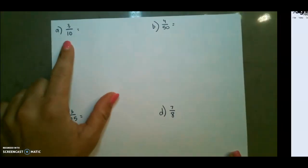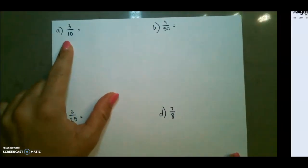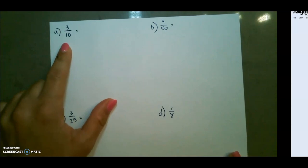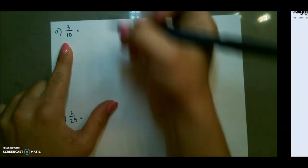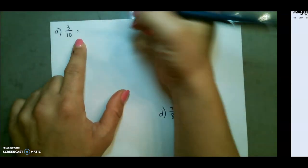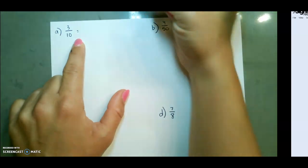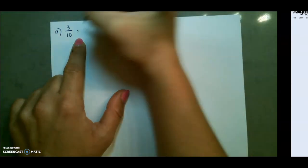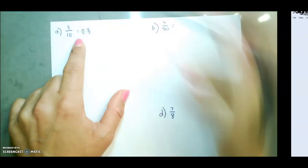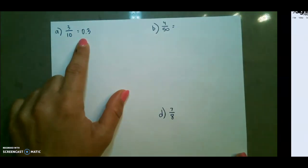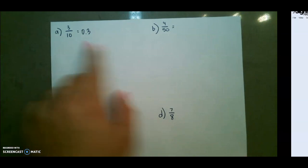So let's look at a couple of examples. Our first example: 3 tenths, where 10 is a multiple of 10. Since the tenths place is the first digit after the decimal, this one is pretty simple — it would just be 0.3, or three-tenths.